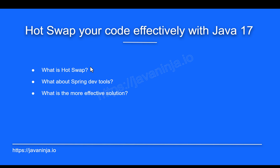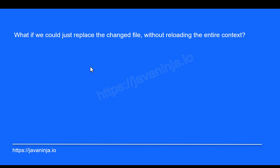Now can we do something about it? Yes, we have a more effective solution for this. What if we could just replace the single class file that we just changed without reloading the entire Spring application context? This is a single file, and if we are able to reload that single file it solves the entire purpose. We don't have to wait for the application to be stopped and then restarted and the context getting up in memory again. Just one class got changed and one class got hot replaced. That's it.